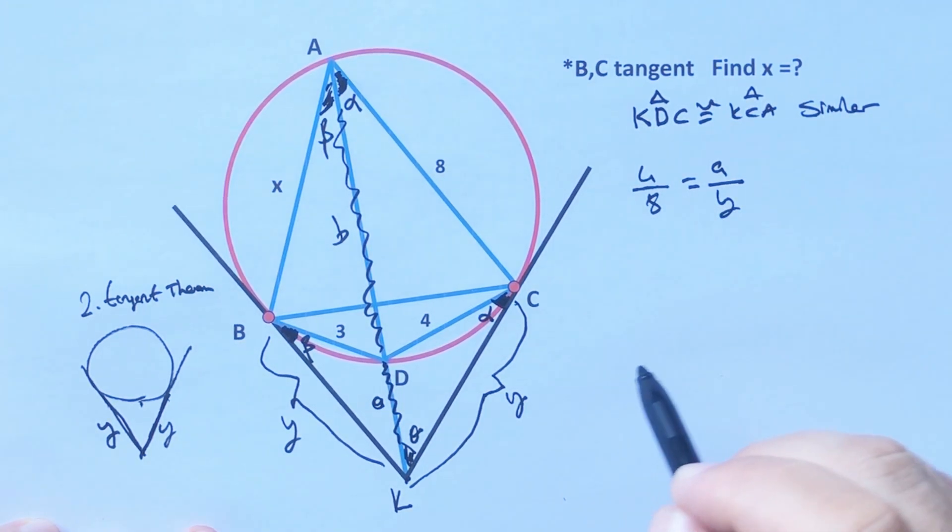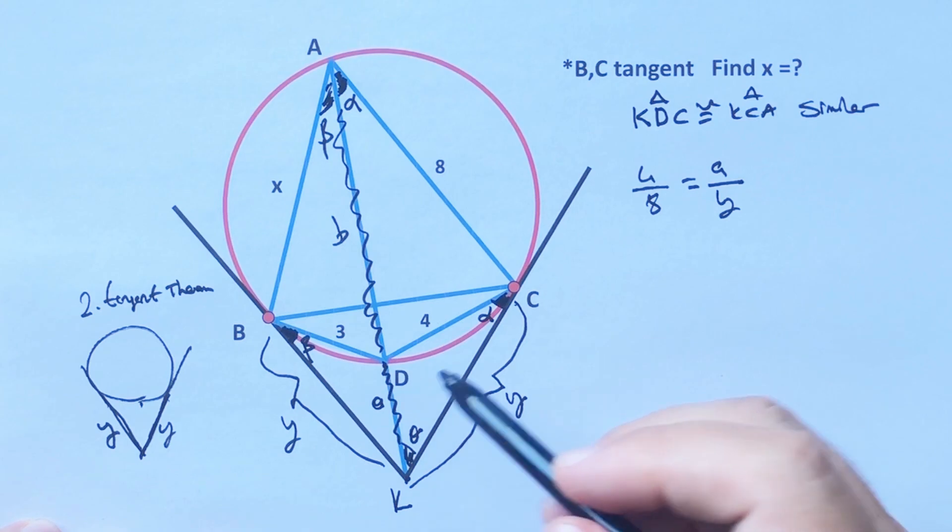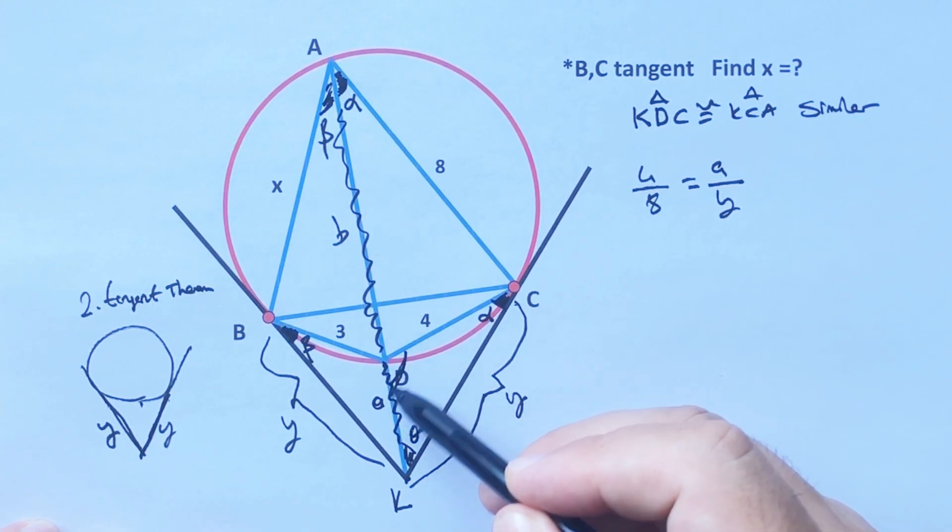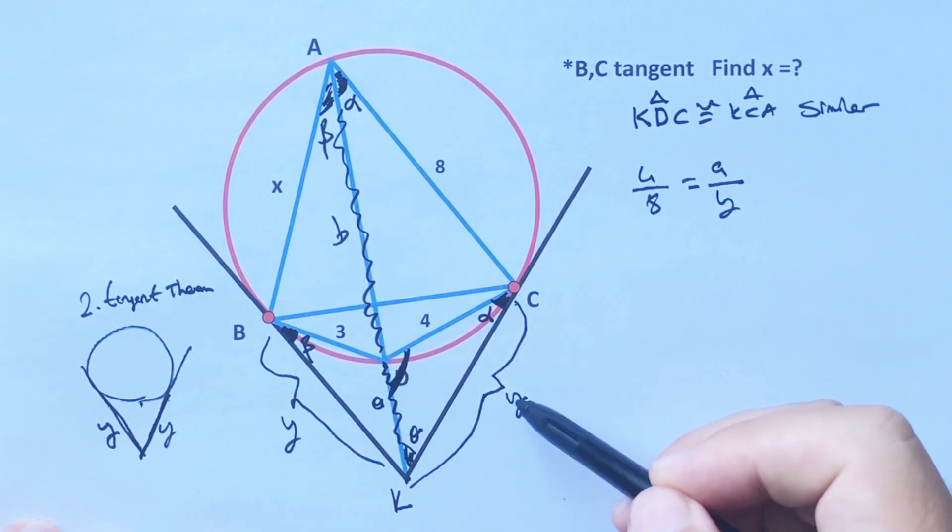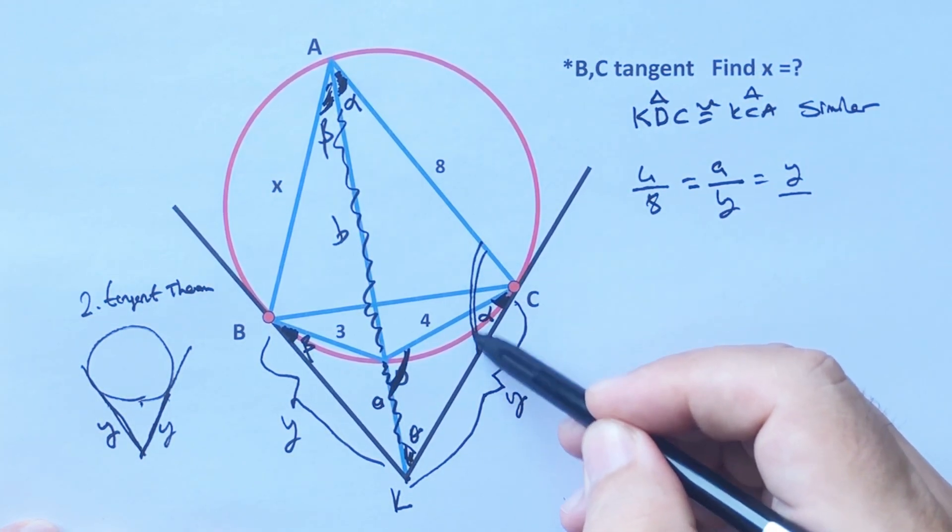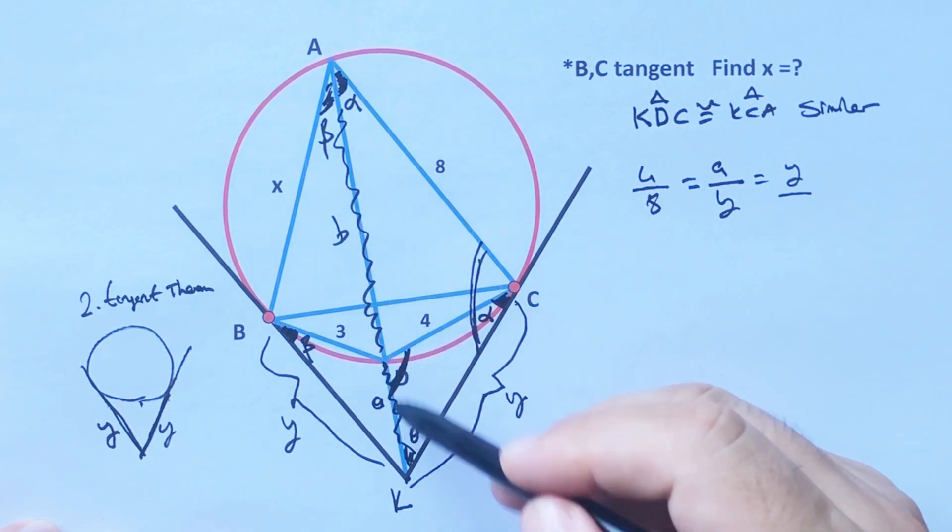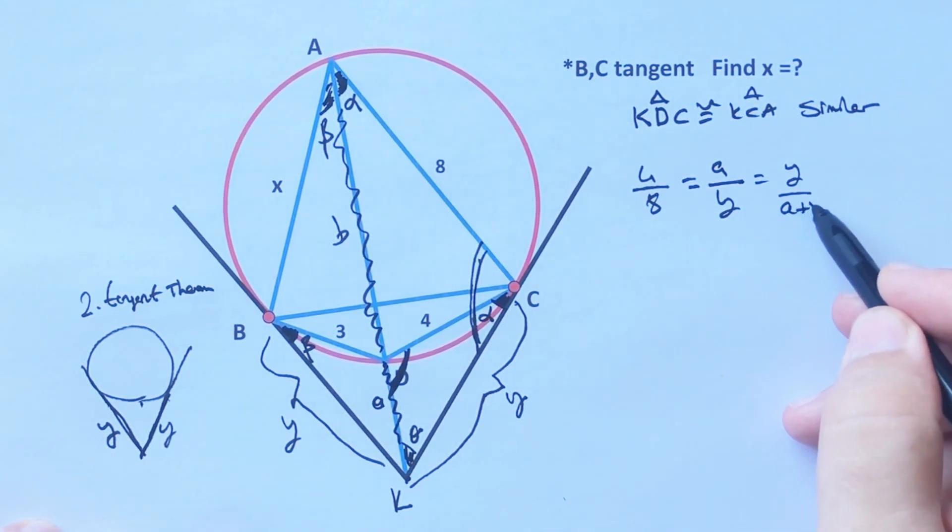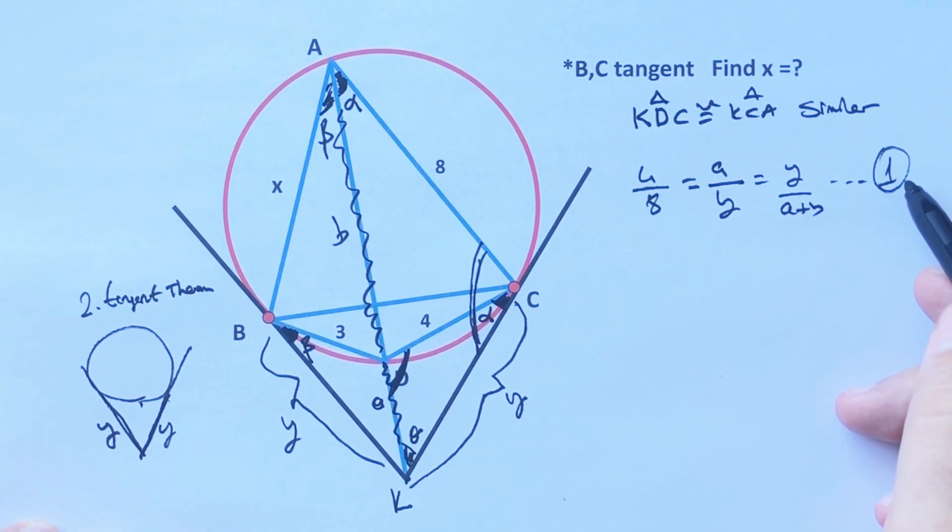y which is opposite of the alpha, then y which is opposite of the third angle over a plus b which is opposite of the third angle. Okay, this is the first equation.